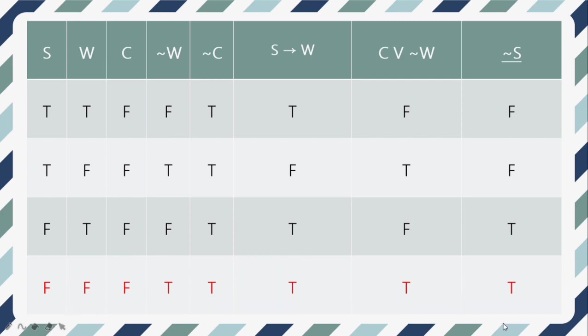Now let us move on to our next example to further understand how we can determine the validity of an argument using standard forms and truth tables.